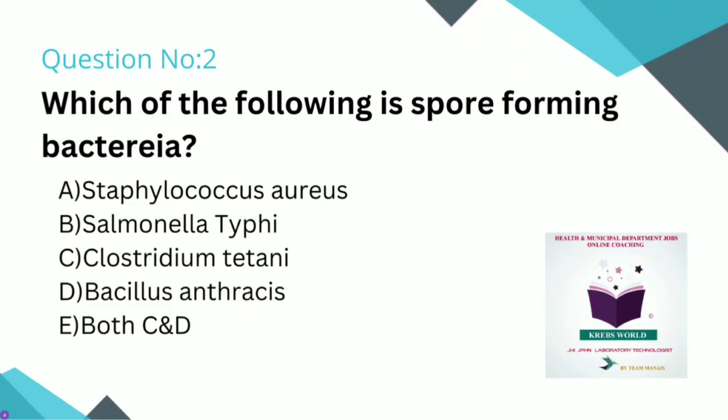Bacillus anthracis is an obligate aerobe. Clostridium tetani is an obligate anaerobe. Staphylococcus and Salmonella typhi are non-spore-bearing organisms.